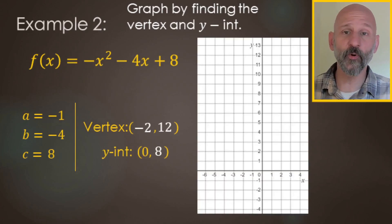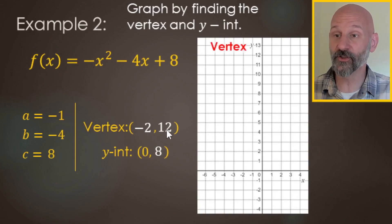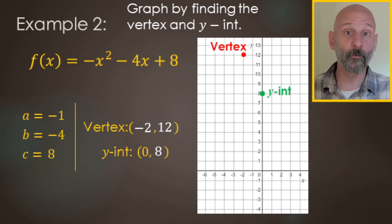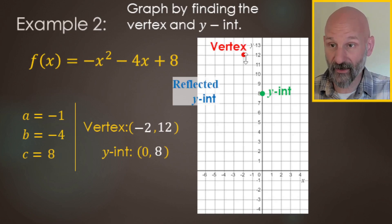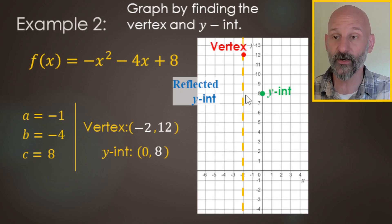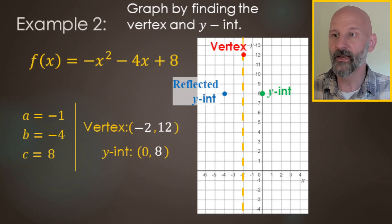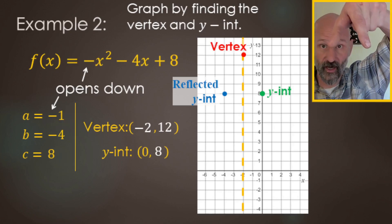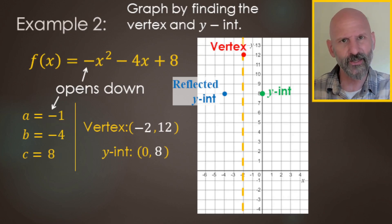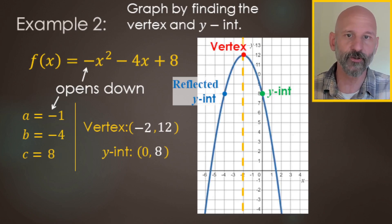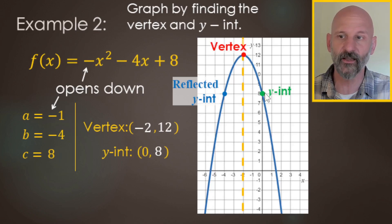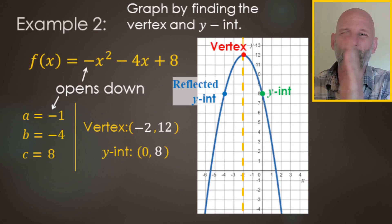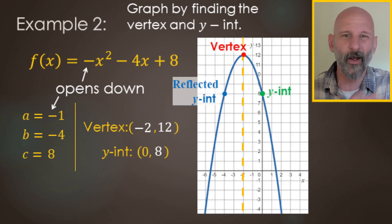Now that we have the vertex (−2, 12) and y-intercept at 8, we're ready to graph. Plot the vertex at −2 on x and 12 on y. The y-intercept is at 8 on the y-axis. The axis of symmetry goes through the vertex; the y-intercept is 2 to the right, so the reflected y-intercept is 2 to the left. Since the leading coefficient is negative, this opens down — an upside-down u. On a computer, click vertex then y-intercept and it reflects automatically; by hand it's not much more time.